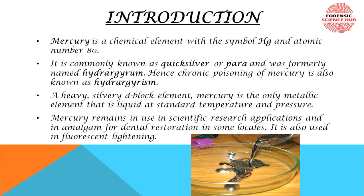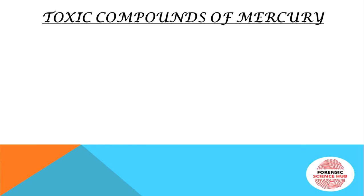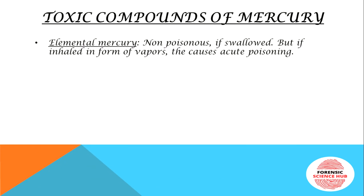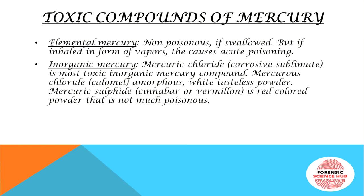It is liquid and silver shiny. Now, the toxic compounds that mercury forms — first is elemental mercury. If elemental mercury is swallowed, it is not poisonous because it is not absorbed by the gastrointestinal tract. However, if it is inhaled in the form of vapors, it causes acute poisoning.